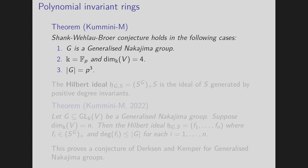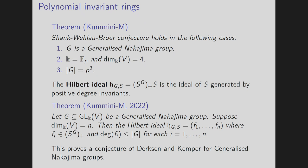We now introduce the Hilbert ideal: an S-ideal generated by all homogeneous invariants of positive degree. We prove that for a generalized Nakajima group the Hilbert ideal is a complete intersection ideal — that is, if the dimension of V is N then the Hilbert ideal is generated by N homogeneous invariants, each of degree at most the order of G. This bound on degrees is a conjecture of Drexler and Kemper, which was not previously known even for Nakajima groups; we have proved it for generalized Nakajima groups.